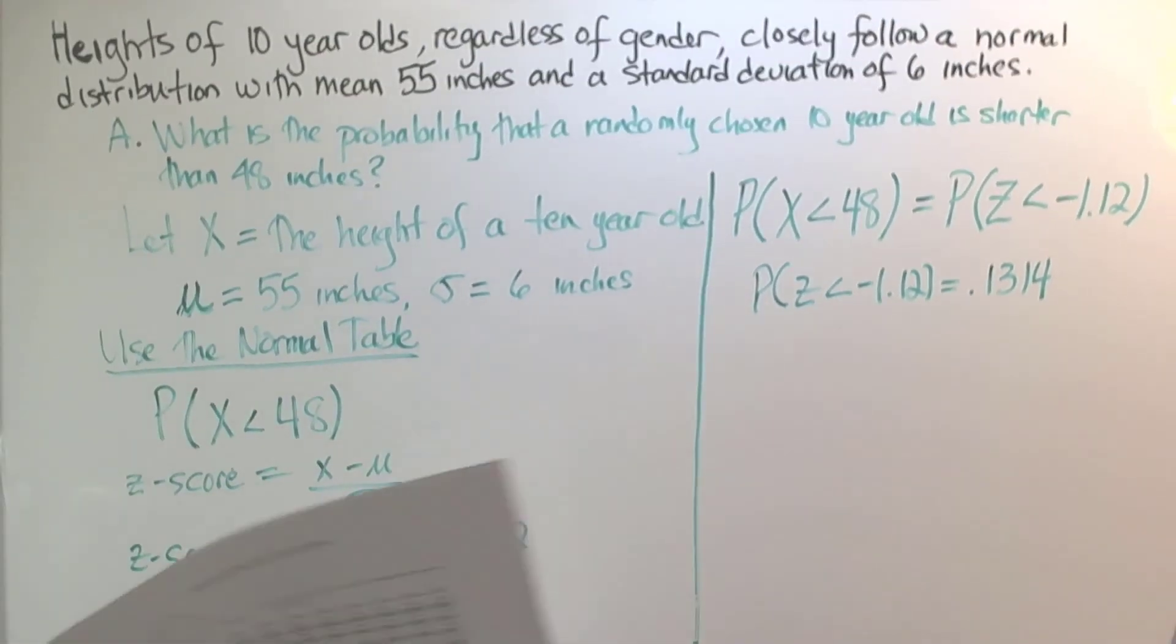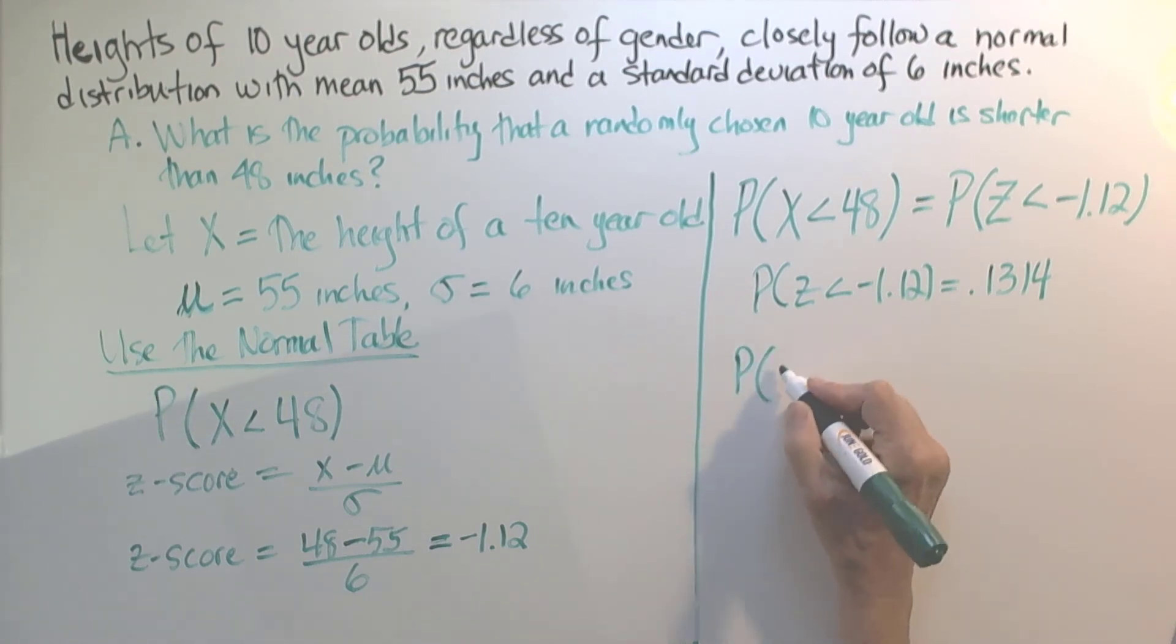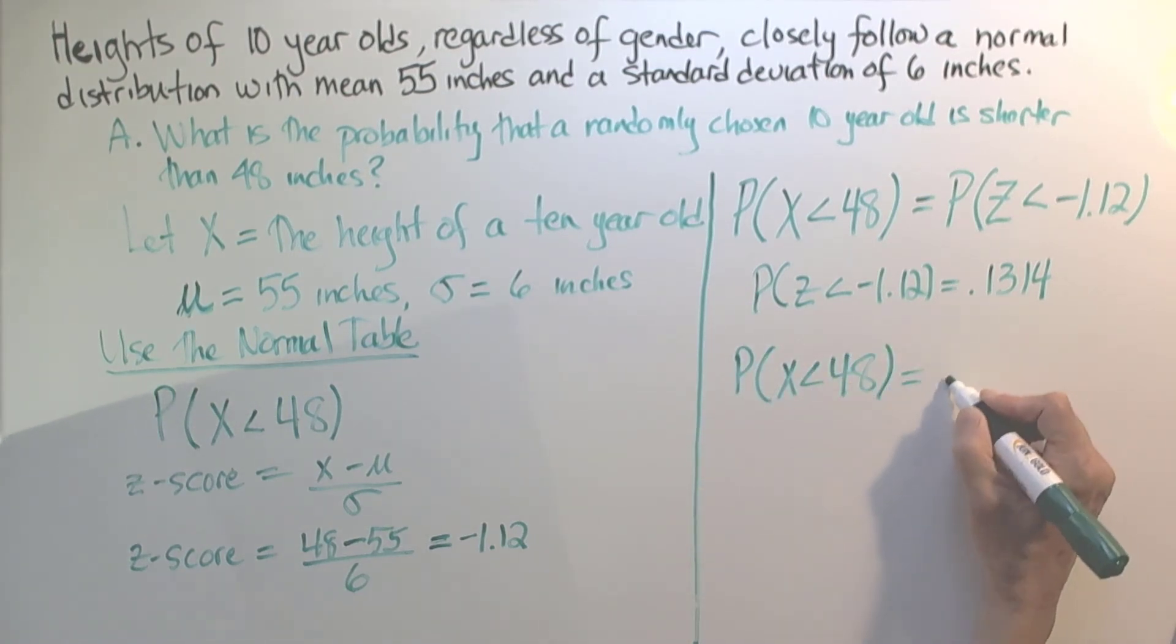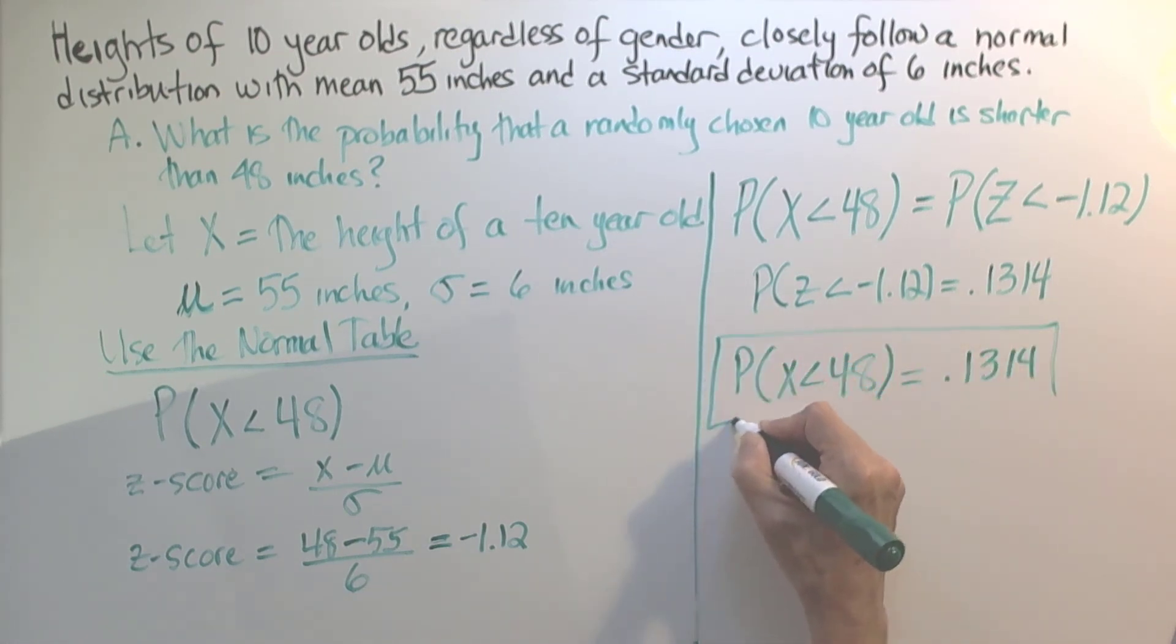So that tells us that the probability that the height of a 10 year old is less than 48 is also 0.1314. I'm going to box my final answer.